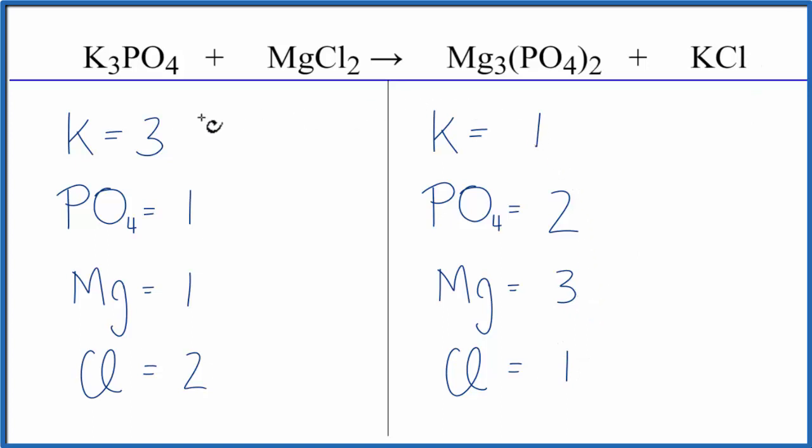Let's fix the potassiums first. We could put a three in front of the KCl, one times three, that would give us three potassiums, chlorines, one times three, that would give us three of those. So the potassiums are fine.